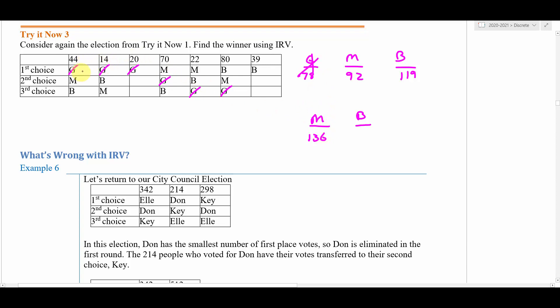Then we go through and look at how many columns B would get. B is going to get this 14 and the 80 and the 39, so that would give 133 votes if we add those up to B, which means M wins IRV.